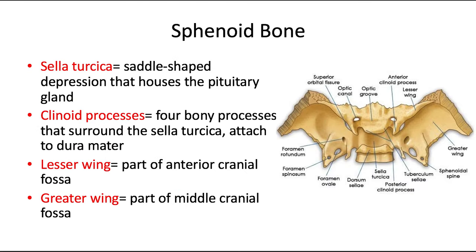The sphenoid bone, also from an aerial view, honestly looks like a dragon as well — with a face, two eyes, and wings extending out. This bone has a ton of holes, or foramina, that we'll cover in the next video. The sphenoid bone has the sella turcica, which is the saddle-shaped depression that houses the pituitary gland.